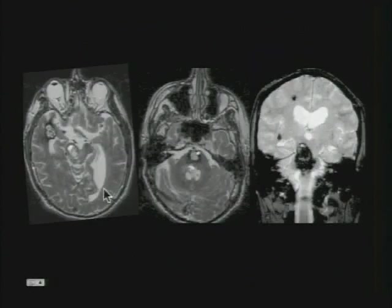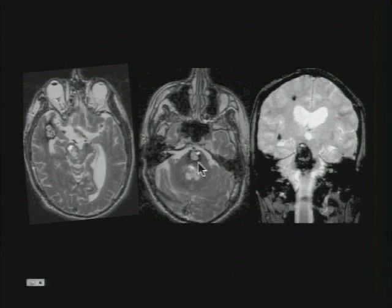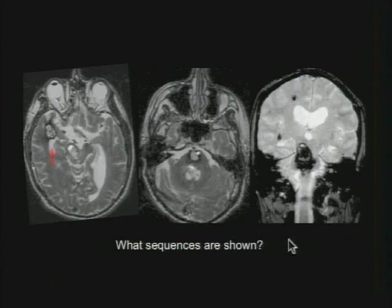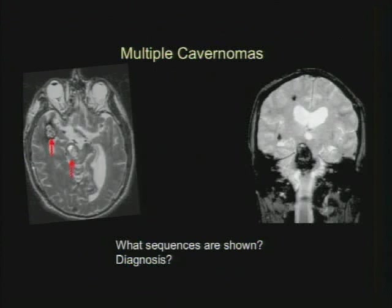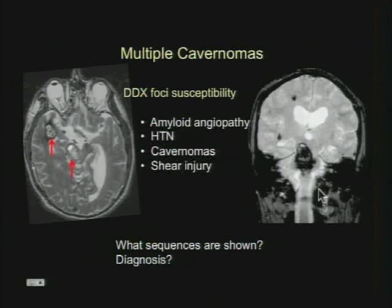Here's the MRI, and now you're seeing the more classical features for cavernoma — a complete hemosiderin ring and T2 hyperintensity centrally from different ages of hemorrhage. You can also see one in the pons, with multiple areas of susceptibility and blooming on the gradient sequence in this patient with familial cavernomas. When you see multiple areas of susceptibility, the differential includes amyloid angiopathy, hypertension, cavernomas, and in the setting of trauma, shear injury.